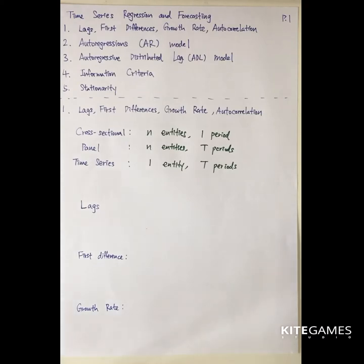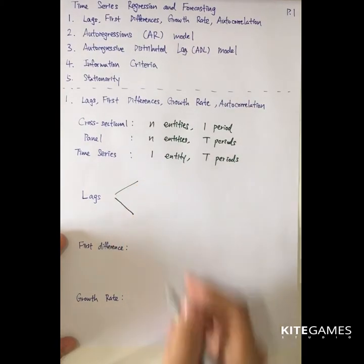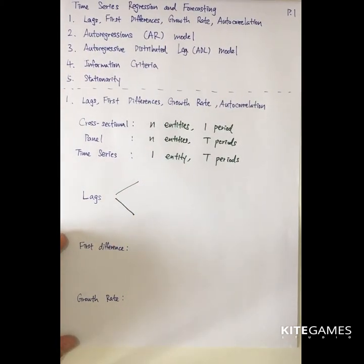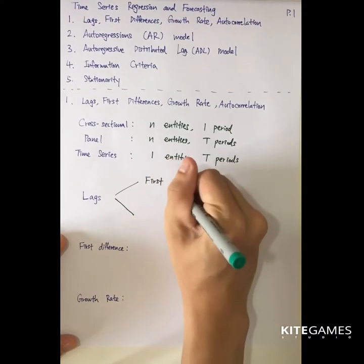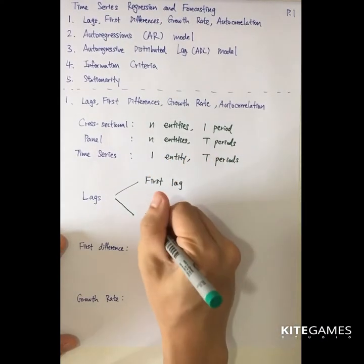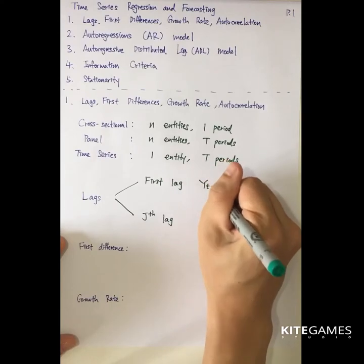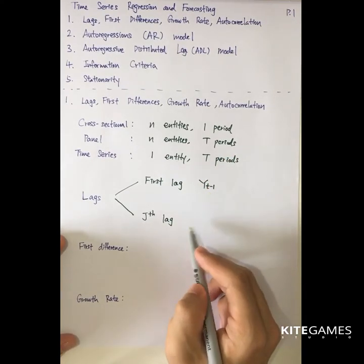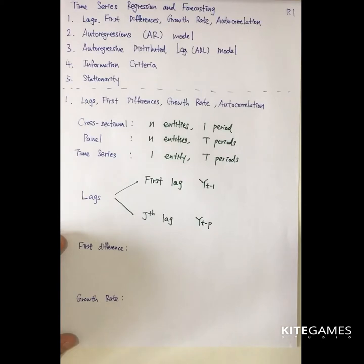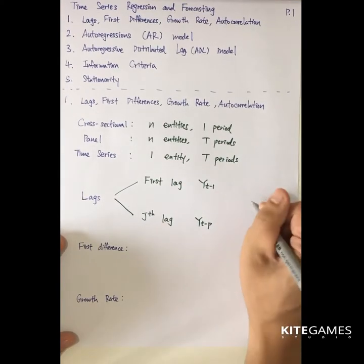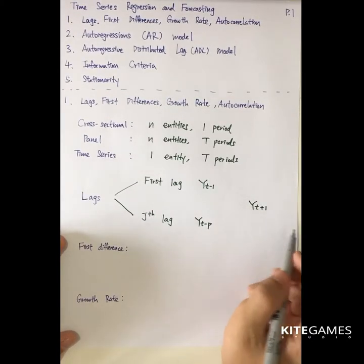Let's talk about some terminologies. The first is the lag. In time series we usually focus on whether past history can explain or forecast the future. So you need to know the concept of first lag, second lag, or up to j-th lag. The first lag means the value one period before, while the j-th lag is the value j periods before. For the future, we denote it as yt+1, yt+2, and so forth.